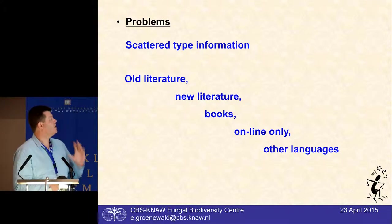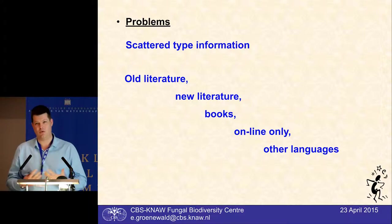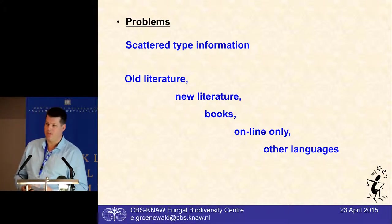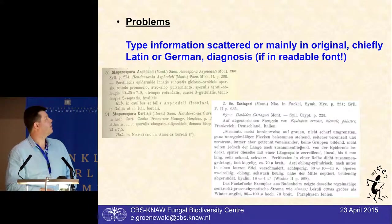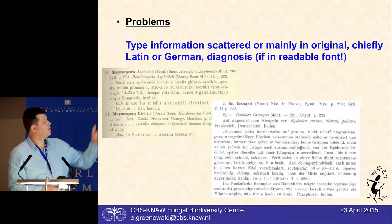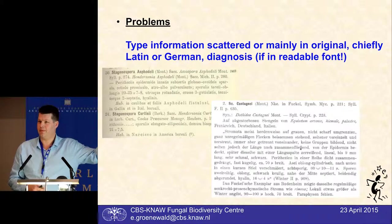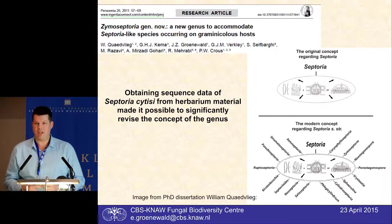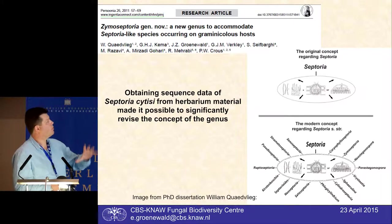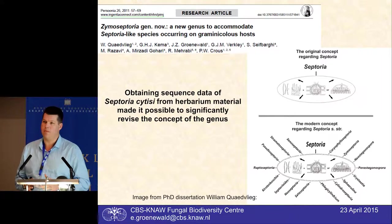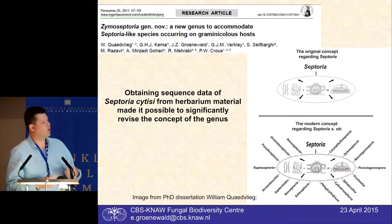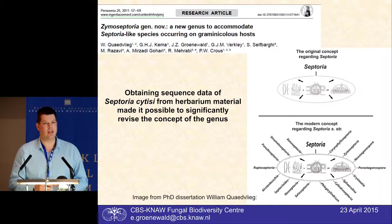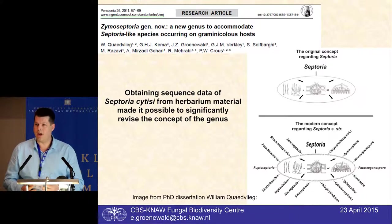One of the biggest problems is scattered type information. For this project I wanted to find type information, but you have old literature, new literature, and books — some things are only published in a book and not in a journal. Some are online, and then there's the difficulty of other languages: some are only available in the original Latin or original German, and if you're lucky you can actually read the font. The type species are critically important because they determine what a genus is — if you have a non-monophyletic genus, the type species determines which clade gets the genus name.